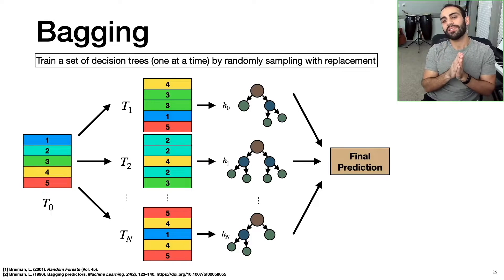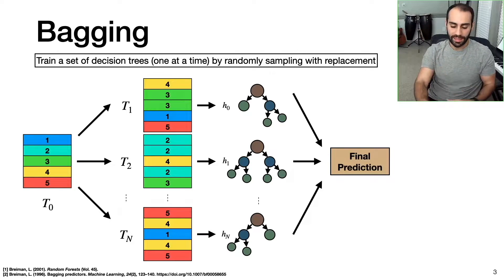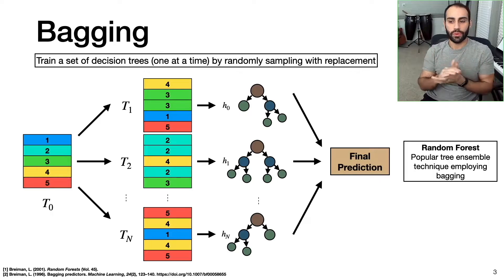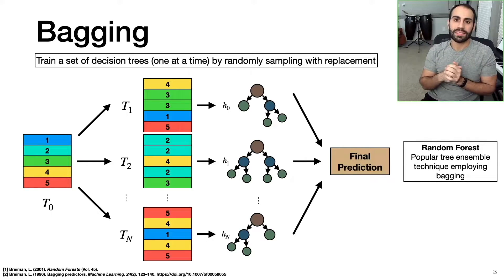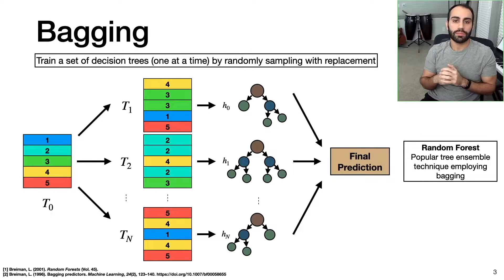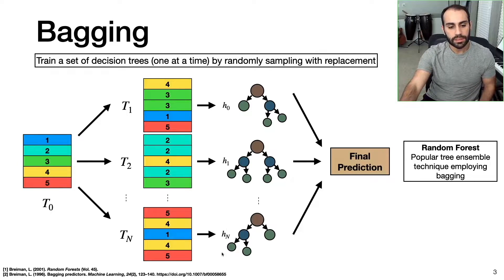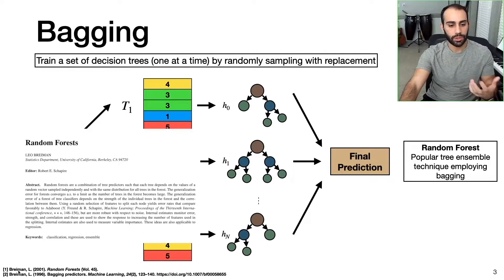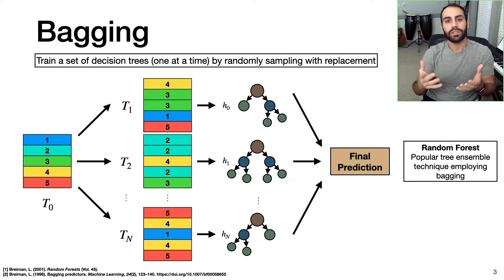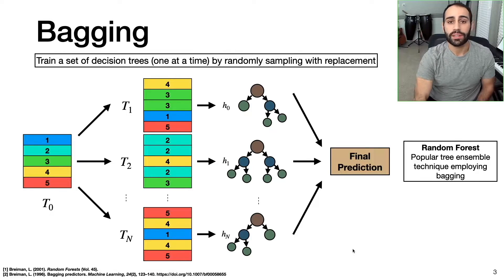One of the most popular machine learning algorithms that uses bagging is called random forest. I'm not going to get into all the details in this video, but for those who are interested, be sure to check out the blog published in Towards Data Science where I give more details about random forest. There's also a really nice paper by the creator of the random forest algorithm, Breiman, who is very well known for his work on decision trees and ensembles.